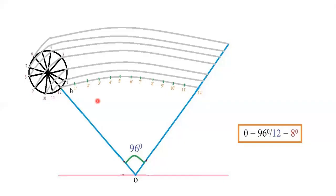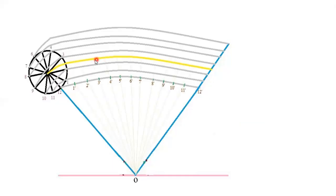With the protractor at point O, divide the 96-degree angle into 12 equal parts by drawing lines at each 8-degree increment and extending them to the locus of center. Once you get all points, name them as 1′, 2′, 3′ up to 12′ on the lower arc of the directing circle. Then from O, join each point and extend to the locus of center (the yellow arc), naming the centers as C1, C2, C3, C4, up to C12.